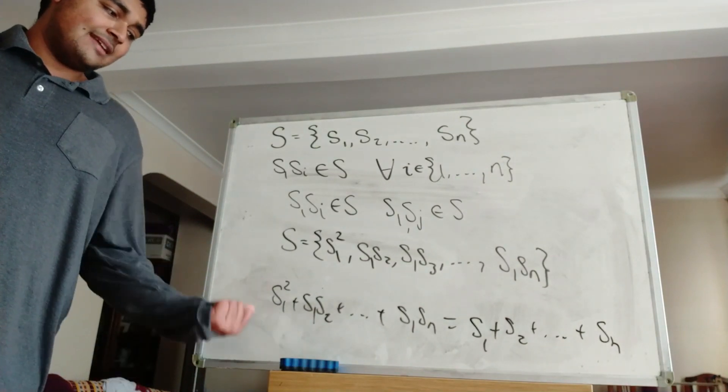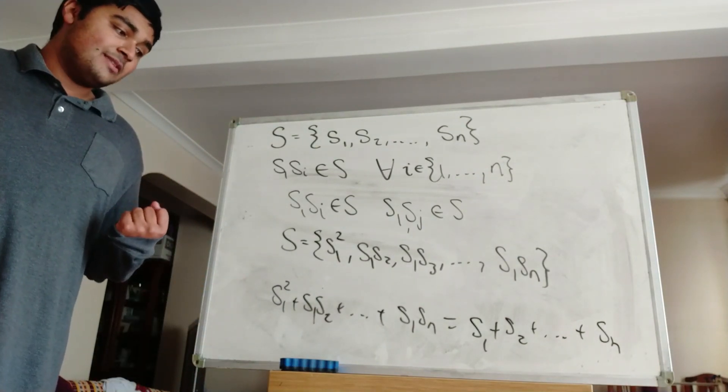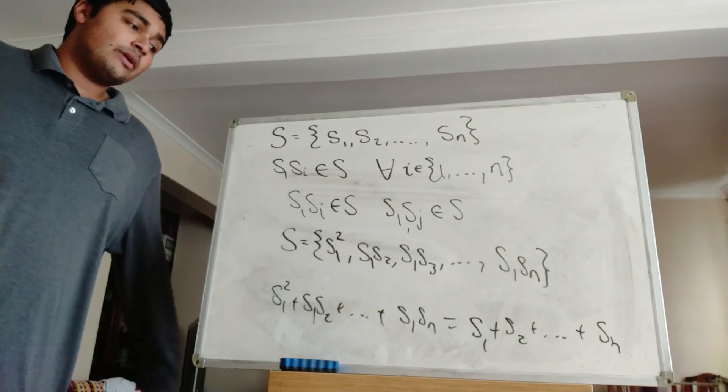Okay, but then of course on this left-hand side, I can factor out an S1. So I'm left with S1 plus S2 plus so on, all the way up to SN.